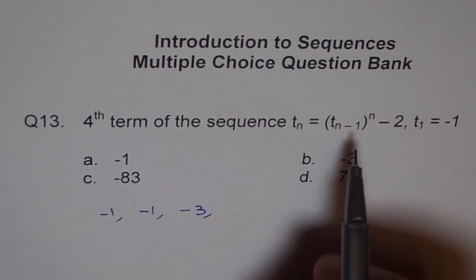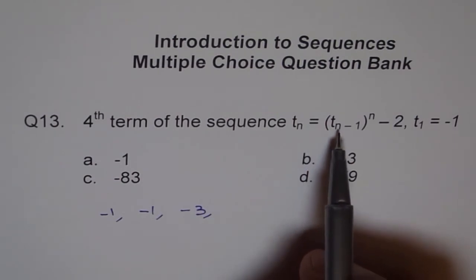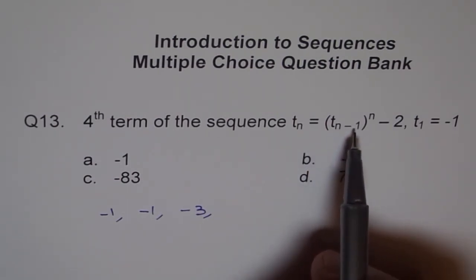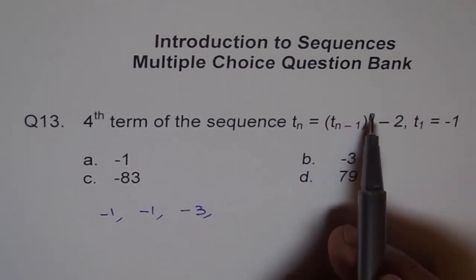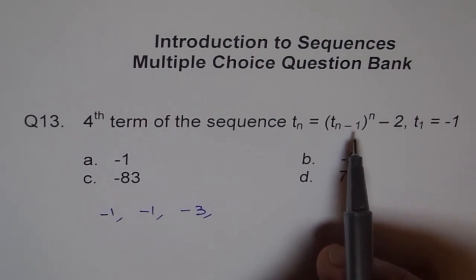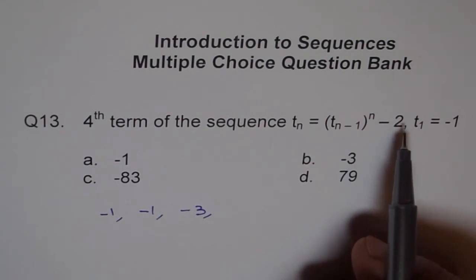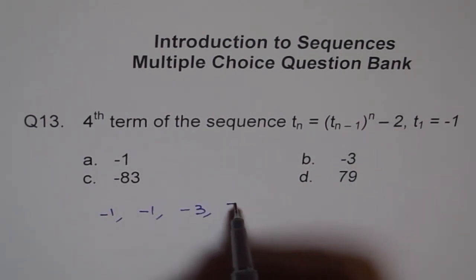For the fourth term, we will put 4. 4-1 is 3. The third term is -3. (-3)^4 will be -3 times -3, 9 times -3, -27 times -3, plus 81. And 81 - 2 will give us 79.